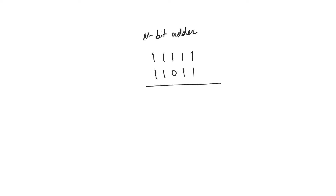What's going to happen here is that in the first bit position, we're going to add 1 plus 1. This is going to give us 0 and 1. In the second bit position, we're going to add 1 plus 1 plus 1, giving us 1, 1. In the third bit position, we add to get 1 and 0, and then we'll continue adding until we get the final result.